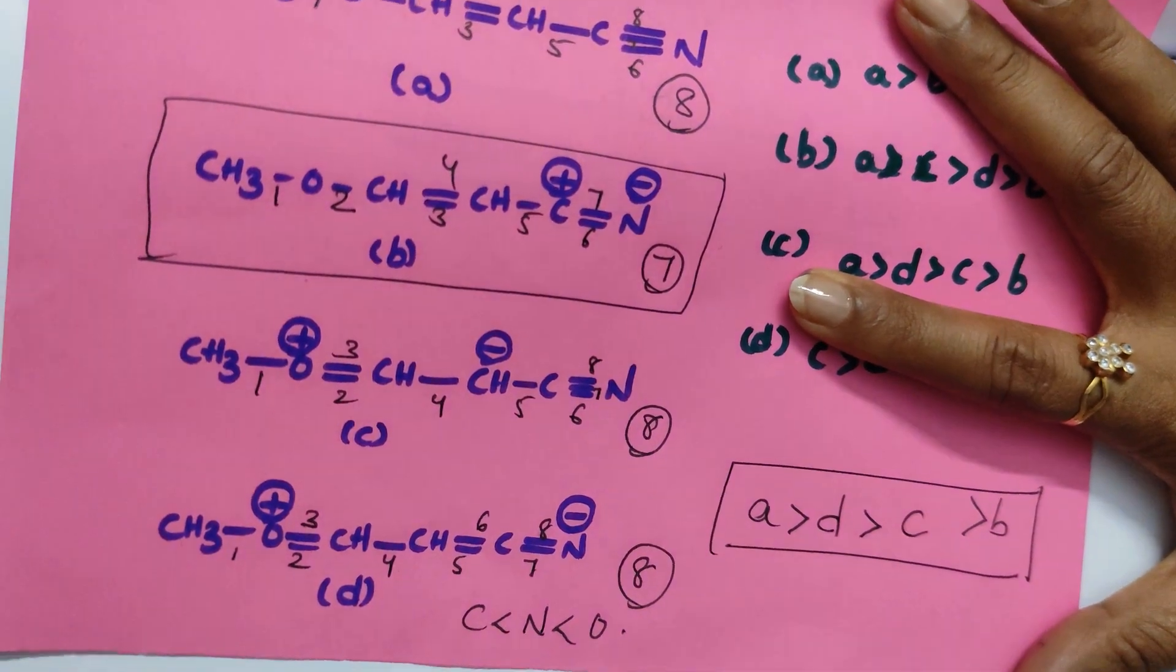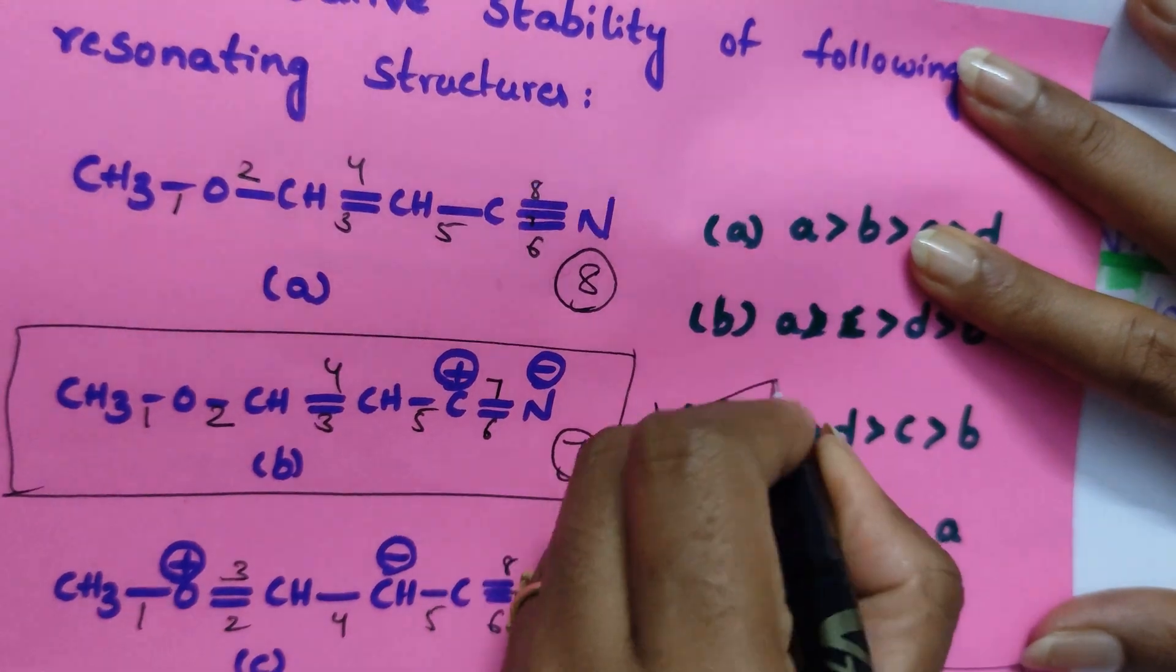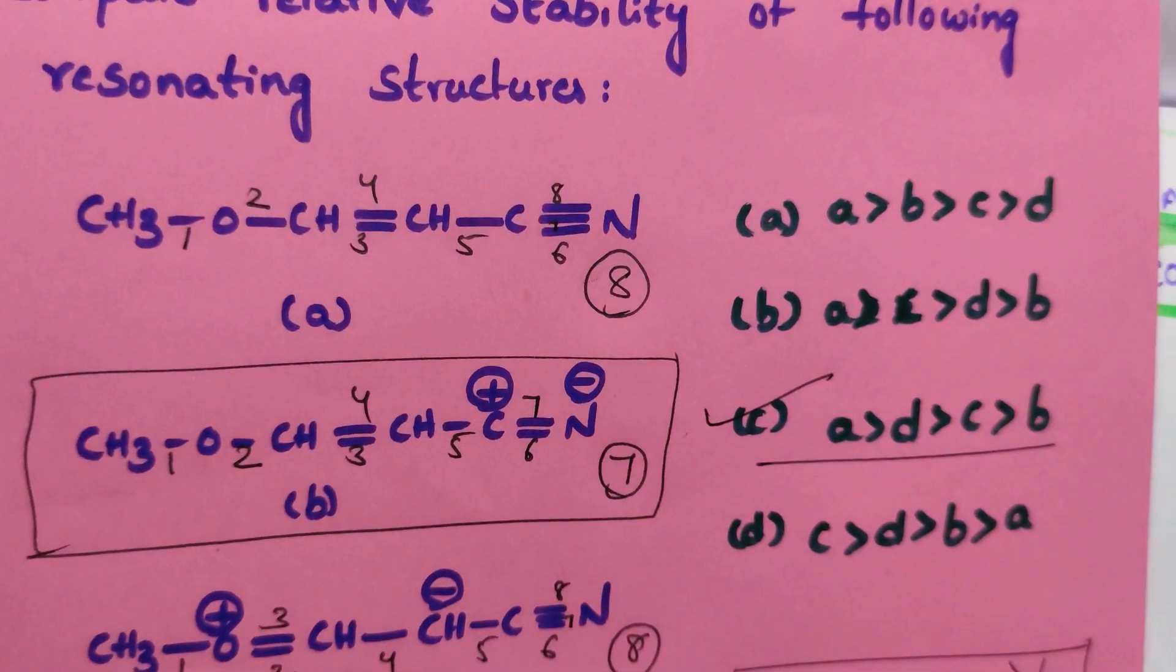A, D. After that, come to C. A, D, C is the right answer. Option C is the right answer. A, D, C, B.